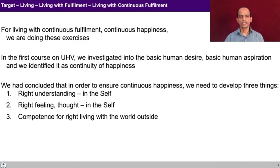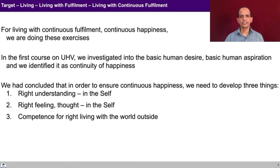If you look at the basic aspiration, it is not only to live with fulfillment — it is to live with continuous fulfillment, continuous happiness. And for that, right understanding is also required. So we require right understanding, we require relationship, as well as physical facility. When we have all three, we are able to ensure our living with continuous fulfillment.